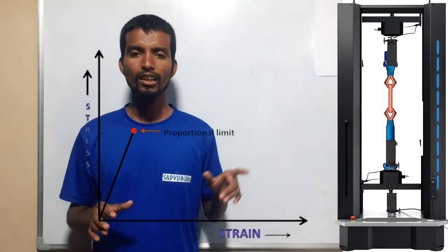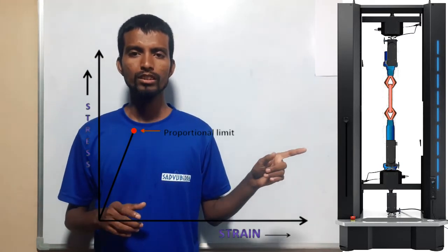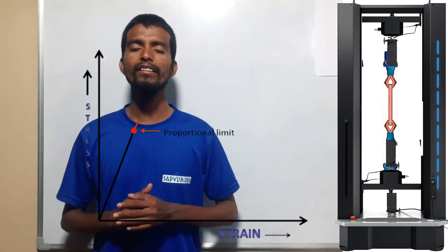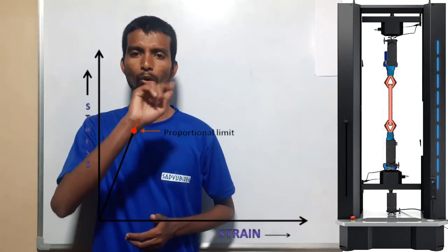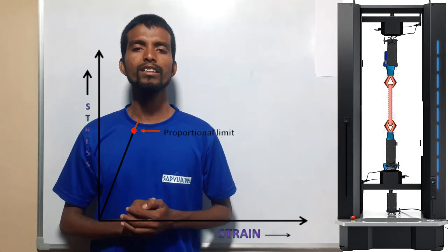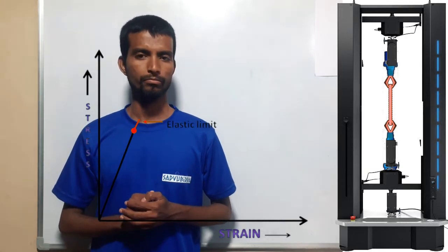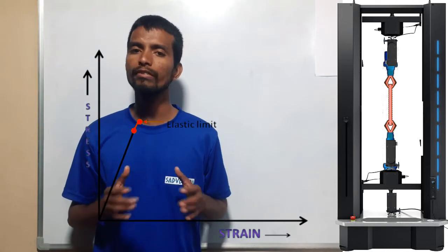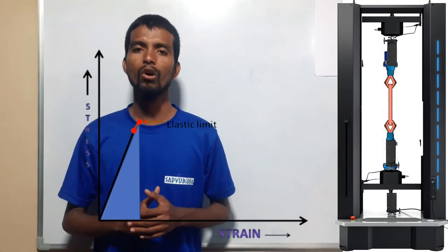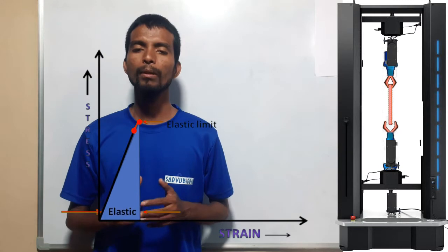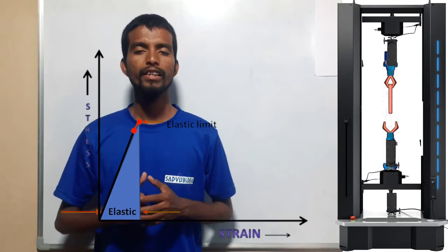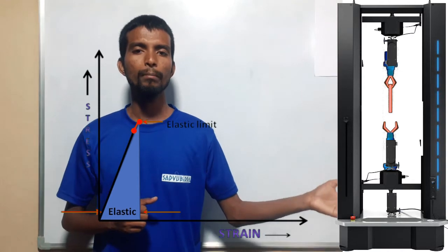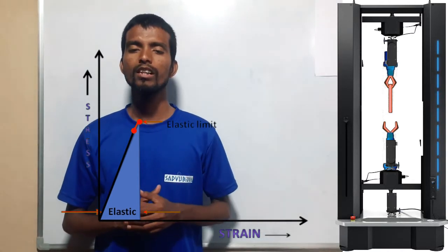At a certain point, if we remove the load, the member will regain its original shape and size. This point is known as the elastic limit. Up to this point, the member will undergo deformation but that is not permanent. The member will undergo temporary deformation because when we release the load, the member regains its original shape and size.